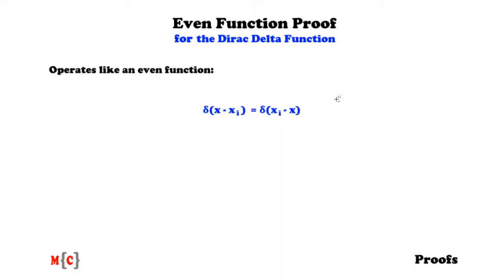Hi there, my name is Mr. Code and in this video we will prove that the Dirac delta function operates like an even function, which is an important characteristic. This characteristic can be expressed in the following way: δ(x - x_i) = δ(x_i - x). So let's prove this characteristic.